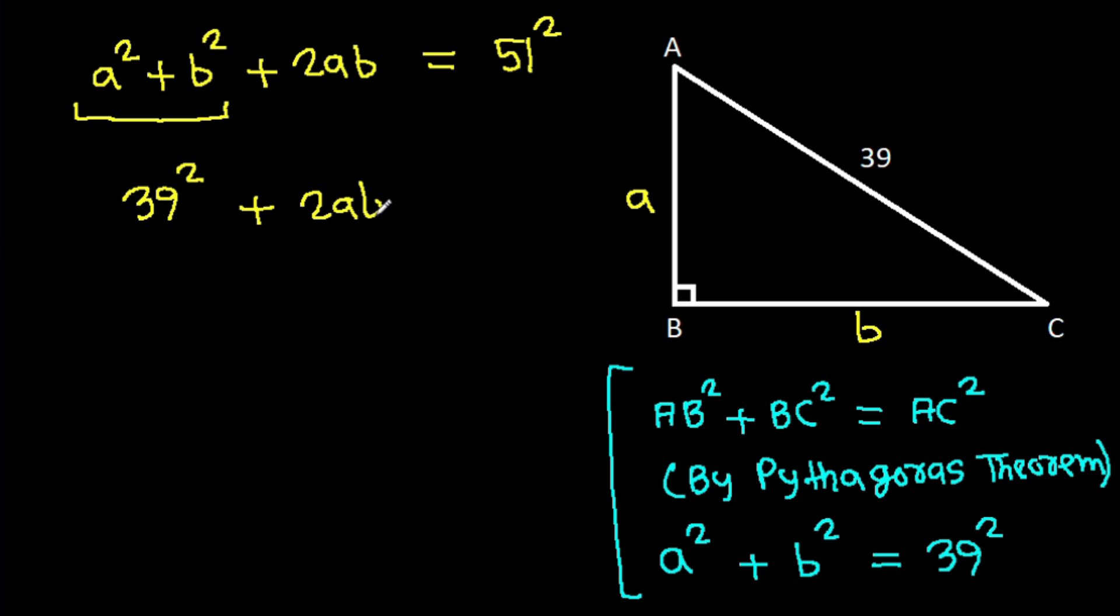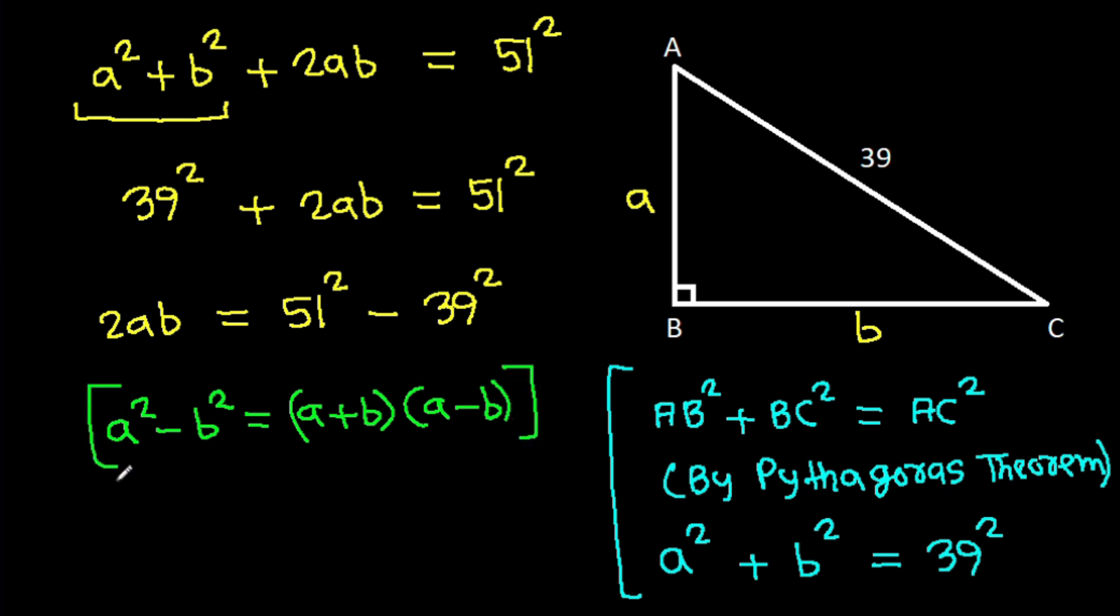Plus 2ab equals 51 squared. So 2ab will be 51 squared minus 39 squared. And a squared plus b squared is a plus b times a plus b. So 2ab will be 51 squared minus 39 squared.